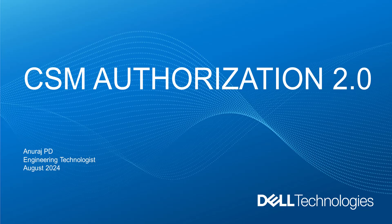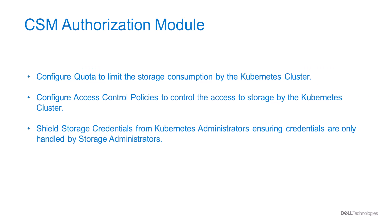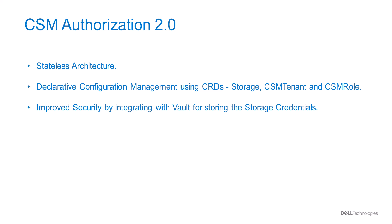The CSM Authorization module provides the ability to configure quotas to limit the storage consumption by a Kubernetes cluster. It also allows configuring access control policies to control access to a storage array by the Kubernetes cluster, and allows shielding the storage credentials from the Kubernetes administrators, ensuring the credentials are only handled by the storage administrators.